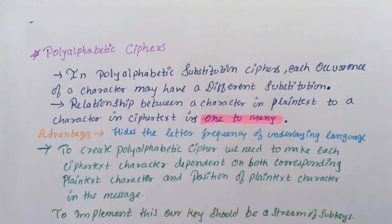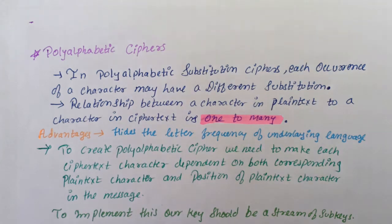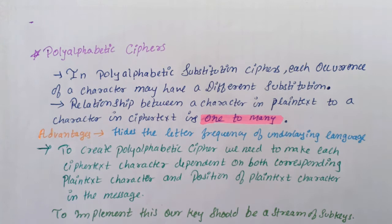For example, in a plain text, 'A' at the beginning could be enciphered as 'D' and 'A' in the middle could be enciphered as 'N'. The advantage of polyalphabetic cipher is that it hides the letter frequency of the underlying language.